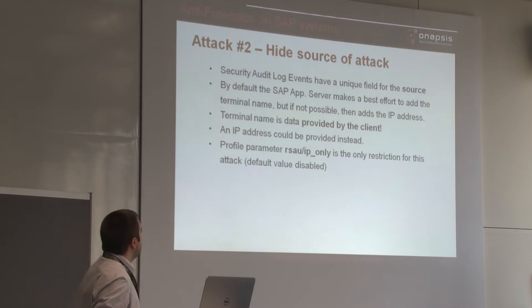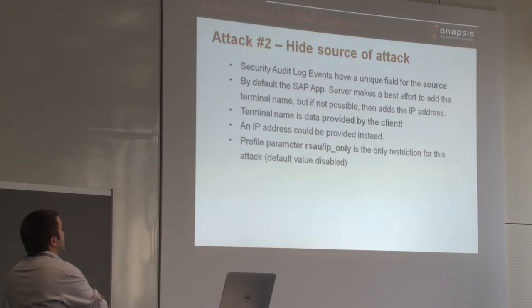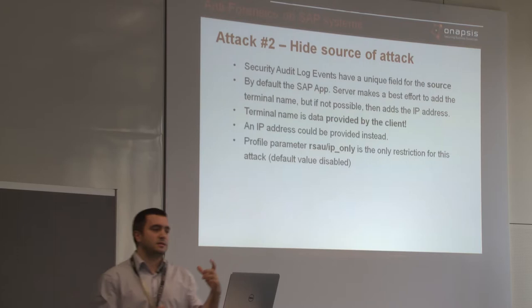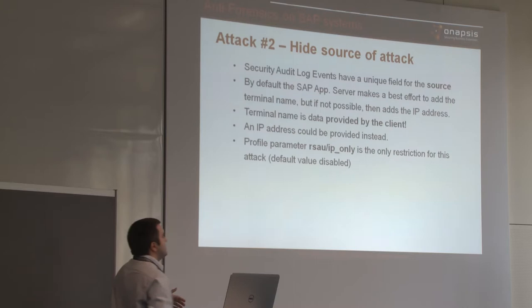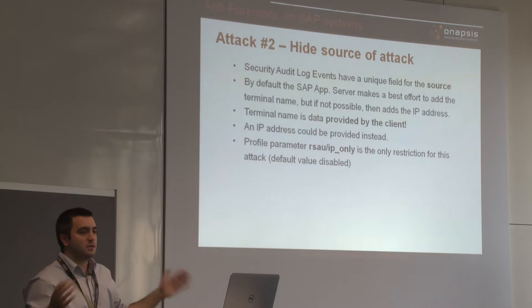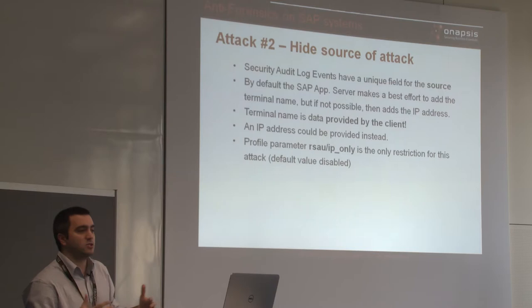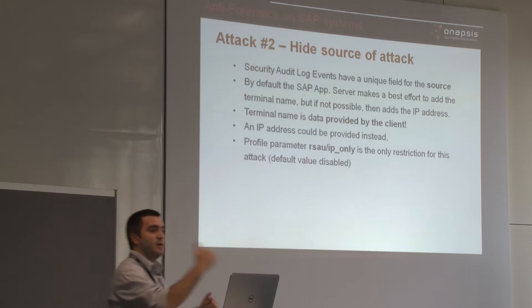Attack number two is related to configuration. Security audit log events have a unique field for the source, stated as a terminal name — this defines the source of the attack. By default, the application server makes its best effort: if the terminal name was provided by the client, it's used; if not retrieved, the application server uses the IP address. So for some events you may have a terminal name, and for others an IP address.